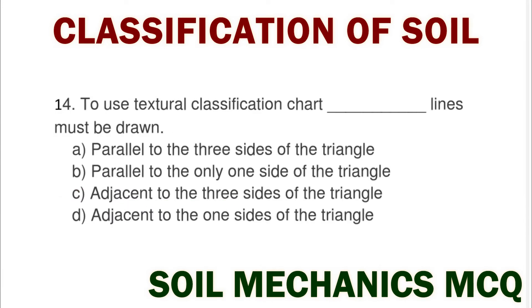Next question: to use the textural classification chart, the line must be drawn — option A parallel to the three sides of the triangle, option B parallel to only one side of the triangle, option C adjacent to the three sides of the triangle, option D adjacent to one side of the triangle. The correct answer is option A parallel to the three sides of the triangle.